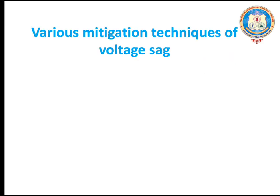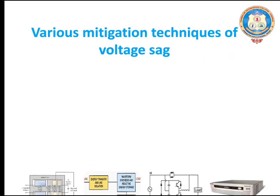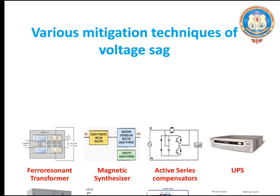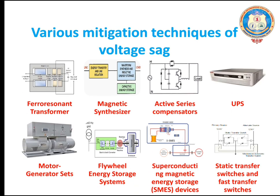What are the various mitigation techniques of voltage sag? Ferro-resonant transformer, magnetic synthesizer, active series compensator, UPS, motor generator set, flywheel energy storage system, superconducting magnetic energy storage device, static transfer switches and fast transfer switches.